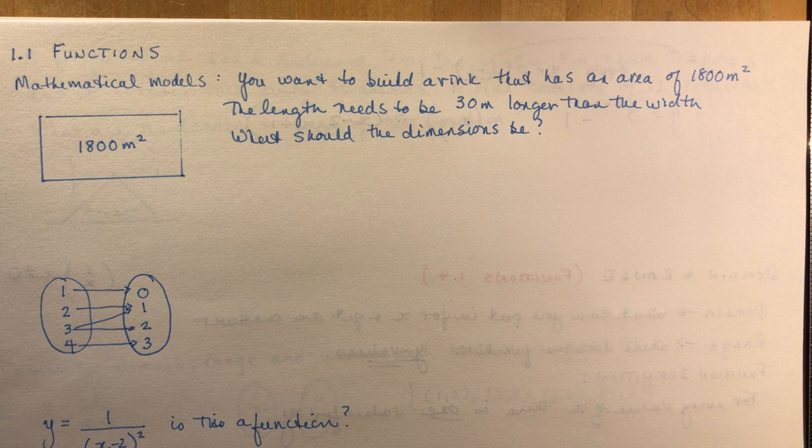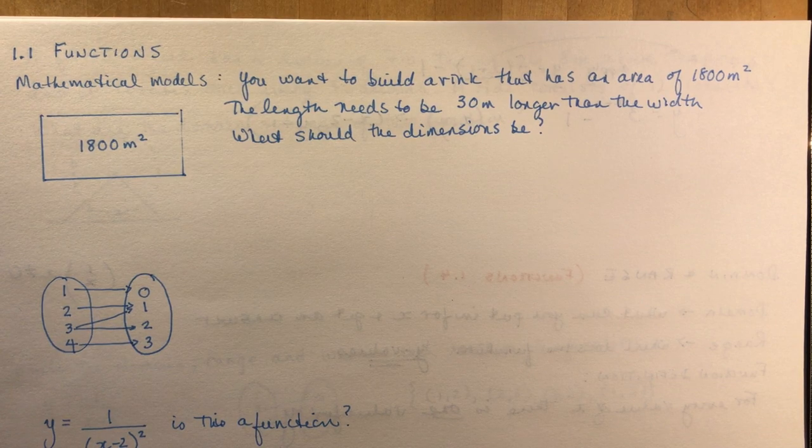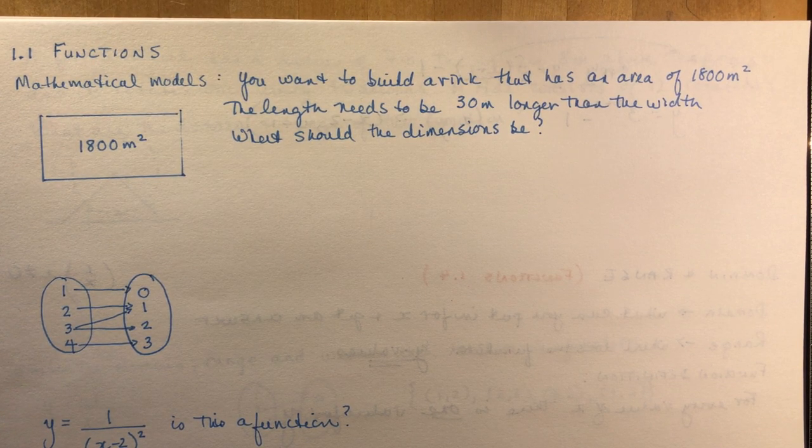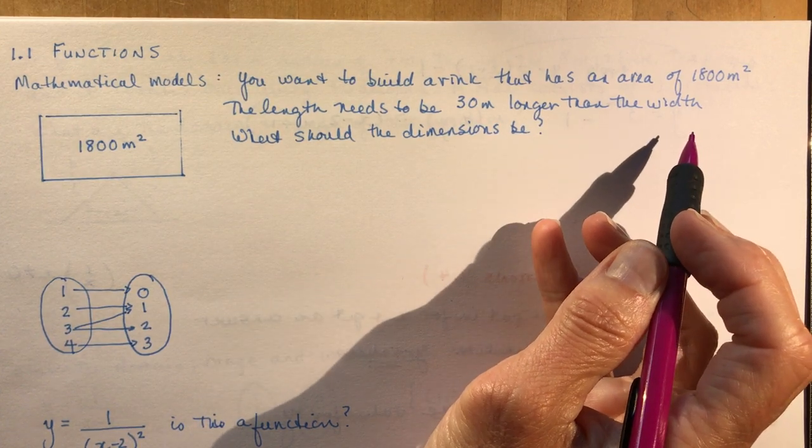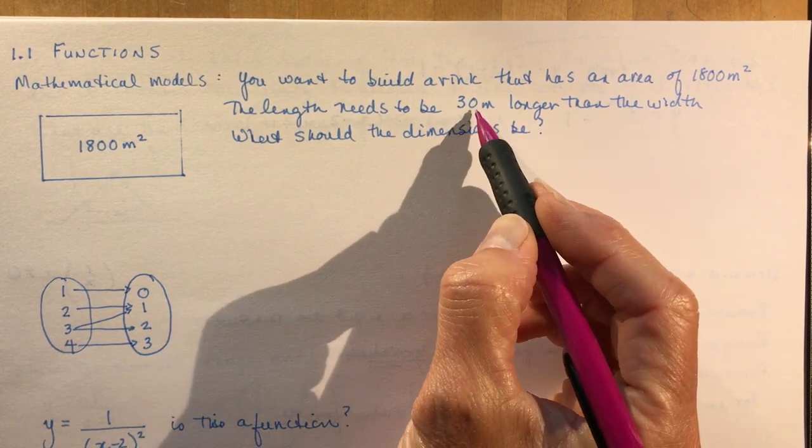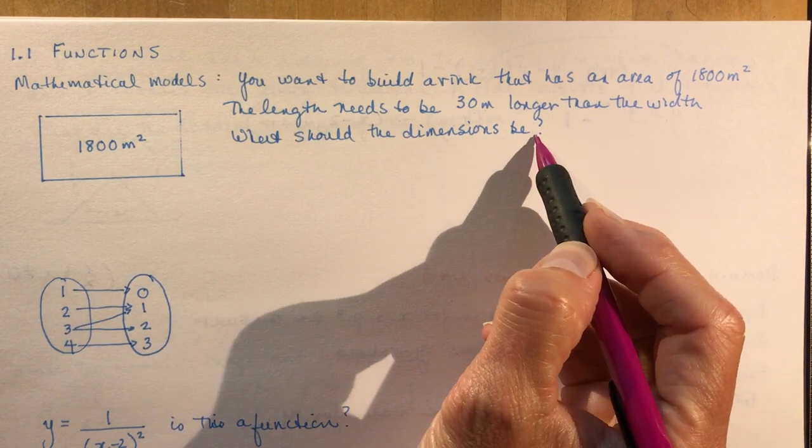It should be familiar to you in some ways. The first thing they ask is can you set up a little mathematical model here. You want to build a rink that has an area of 1800 square meters. The length needs to be 30 meters longer than the width. What should the dimensions be?